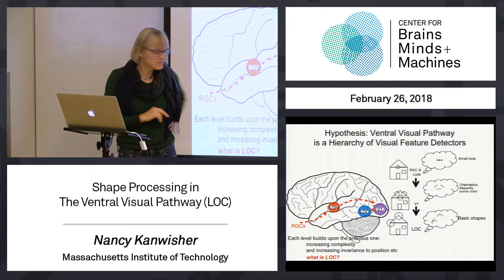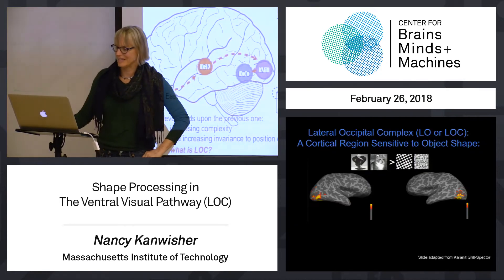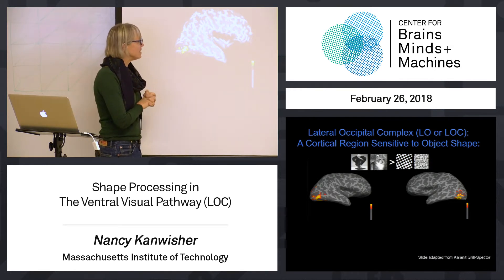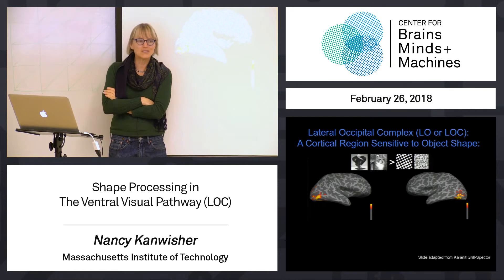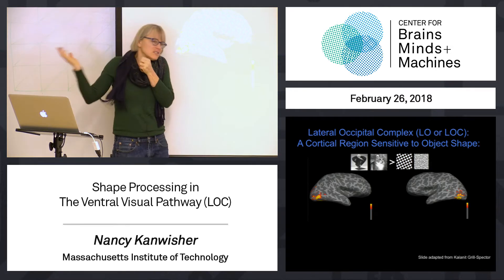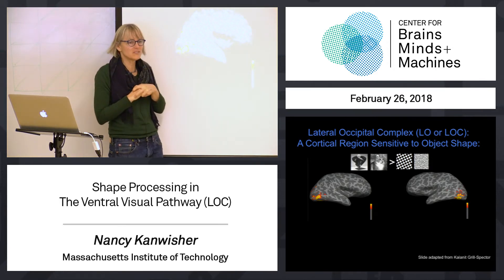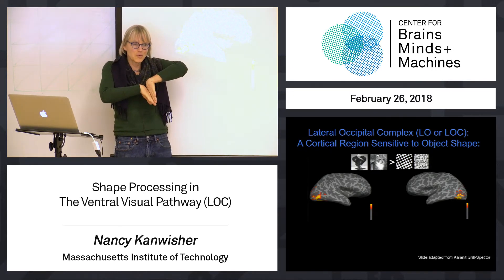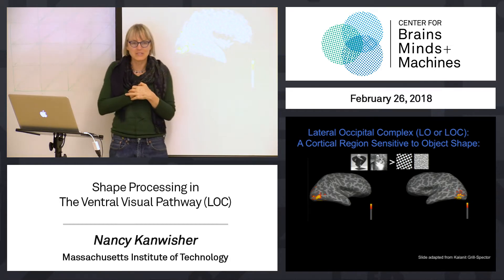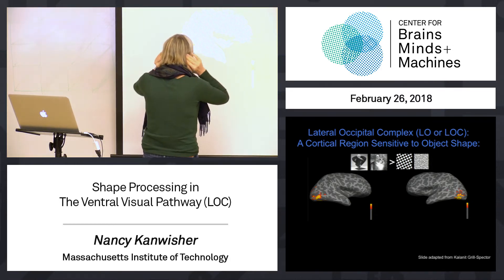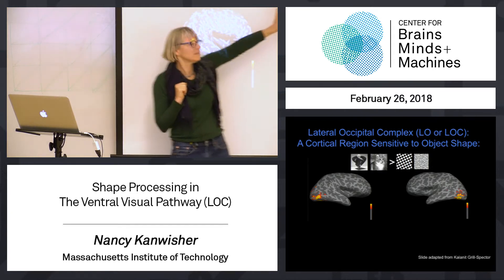What is the evidence for this? There's a little region called LOC — lateral occipital complex — that responds to basic shapes. Here is LOC in one subject. When you see these funny-looking modeled brains, that's a mathematically inflated brain so you can see the whole cortical surface. The cortex is all folded up inside the head, so we mathematically inflate it to see everything. The dark bits are the parts that were inside a fold before inflation. LOC appears in both right and left hemispheres on the lateral-bottom surface of the brain near the back. It responds more to shapes than junk.